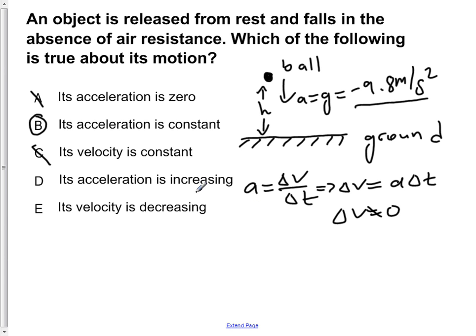D states that its acceleration is increasing, but we've already stated that our acceleration is constant. So this is wrong. Now, the thing to be careful about is E. It says its velocity is decreasing.